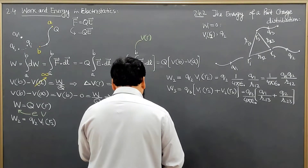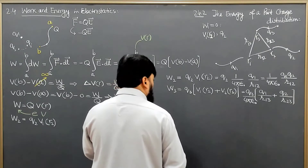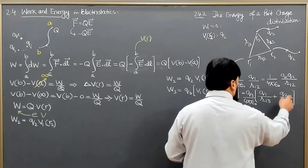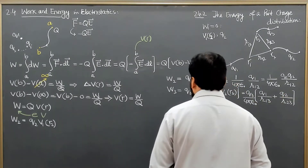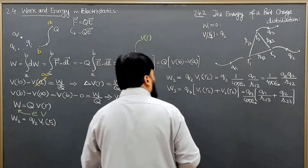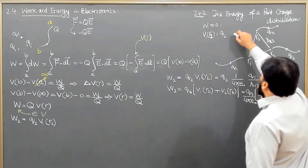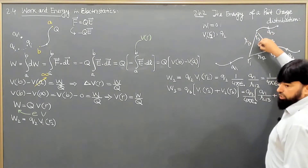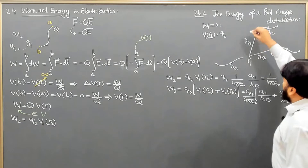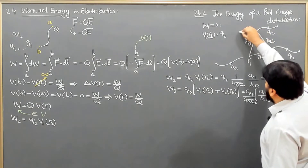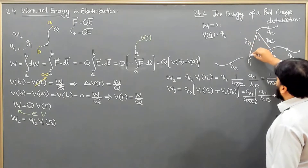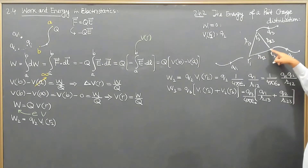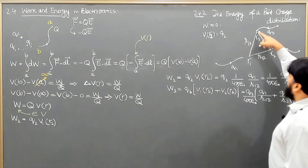This is equal to Q3 times 1 over 4π epsilon naught times Q1 over R13 and Q2 over R23. Now, keeping the same analogy, if we are bringing charge Q4 in, then we will have the potential. Q4 will be at location R4 and it will experience the field from R1, the field from R2, and the field from R3.